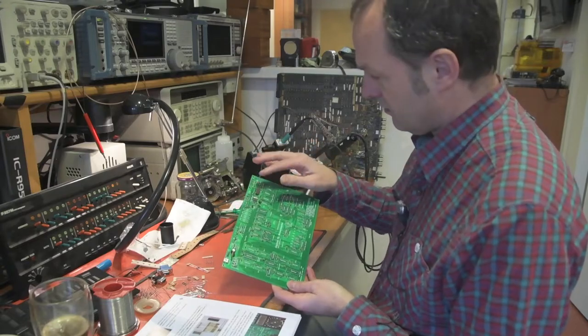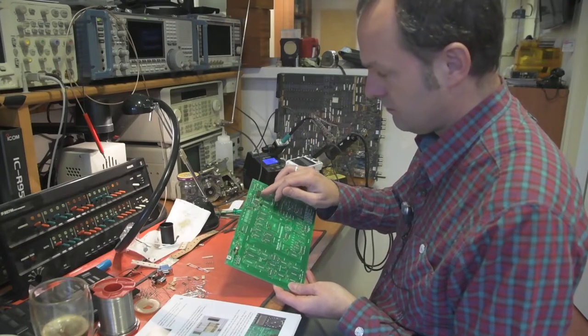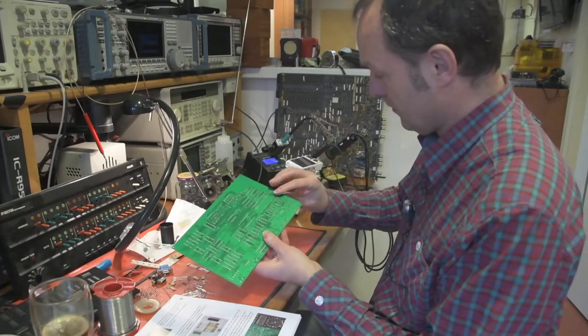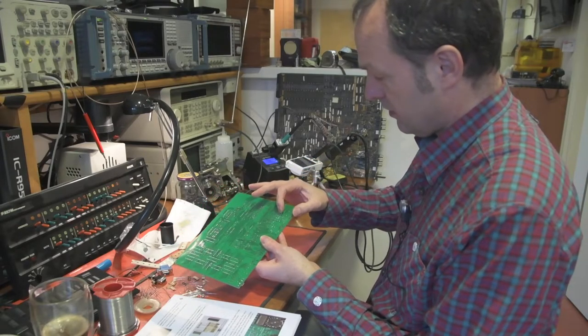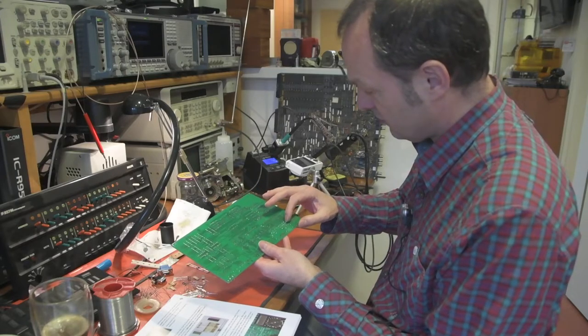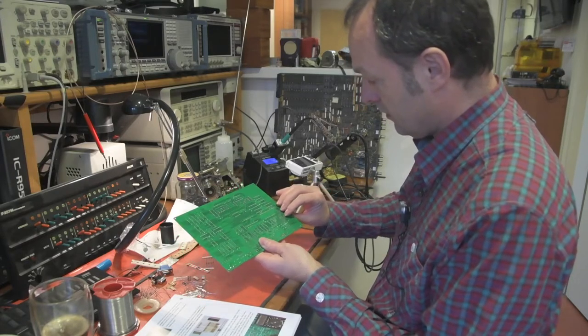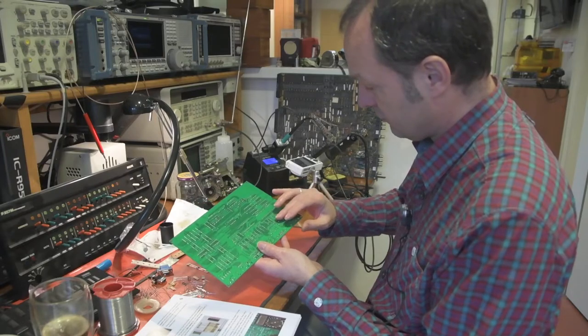So once you've soldered the IC, double check the orientation, check all the solder joints. And since the pins are quite close together, make sure that they do not touch each other. Alright, so this looks fine, there's no excess solder.